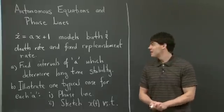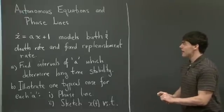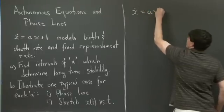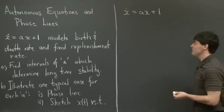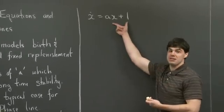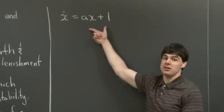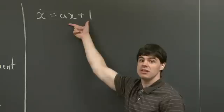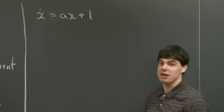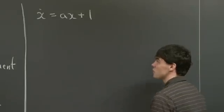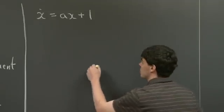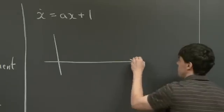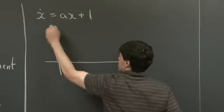Welcome back. The problem we're looking at is x dot equals ax plus 1. As mentioned in the title of the problem, this is an autonomous equation, which means that the right-hand side is not a function of time — it only depends on x. For these types of problems, the critical points, or the points at which the right-hand side vanishes, tend to determine the long-time characteristics of the solution. We can get a handle on what intervals of a determine the long-time stability by sketching x dot versus x.